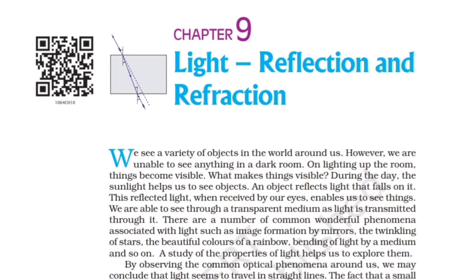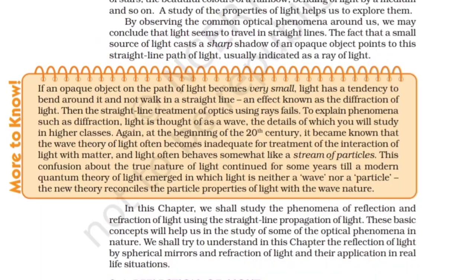There are a number of common wonderful phenomena associated with light such as image formation by mirrors, the twinkling of stars, the beautiful colors of a rainbow, bending of light by a medium and so on. A study of the properties of light helps us to explore them. By observing common optical phenomena around us, we may conclude that light seems to travel in straight lines. The fact that a small source of light casts a sharp shadow of an opaque object points to this straight-line path of light, usually indicated as a ray of light.